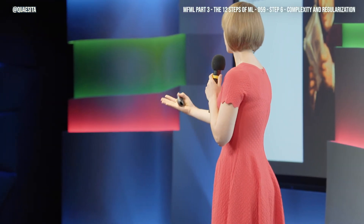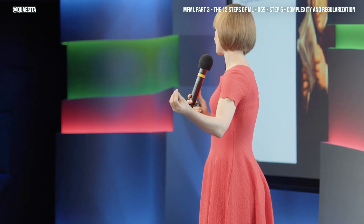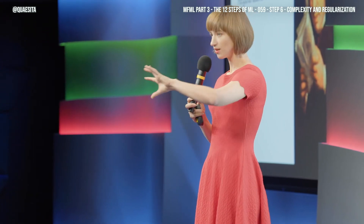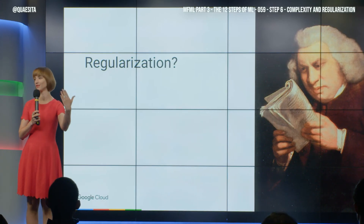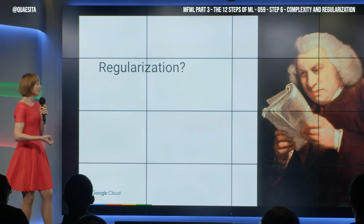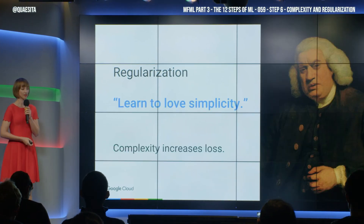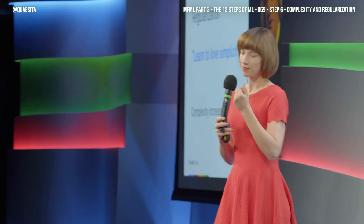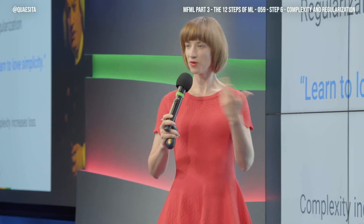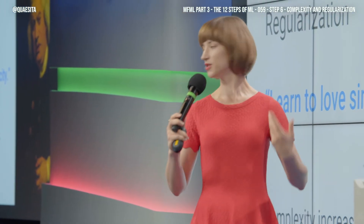One way to enforce that love of simplicity is through the process. Another way is to algorithmically enforce it — the algorithm will itself prefer a simpler solution to a more complicated one if given two options. And that is what regularization in machine learning is all about. It is simply about an algorithmic love of simplicity. Before, your loss function is all about don't make mistakes, and points are only assigned based on how well you avoid mistakes.